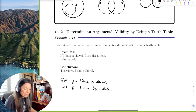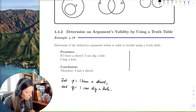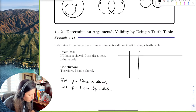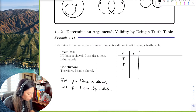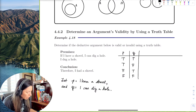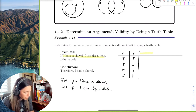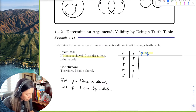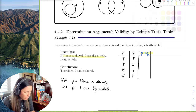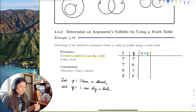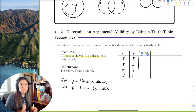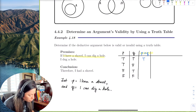It's two statements, two choices, so we have four scenarios. Here's p, here's q — true, true, false, false for p, and alternating for q. Now let's do the first premise: if p then q, meaning 'if I have a shovel, I can dig a hole.' Remember, the only time an implication is false is when you have a true antecedent and a false consequent — like winning tickets to Coachella but not taking your friend.